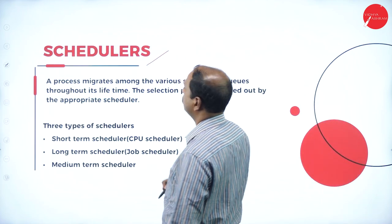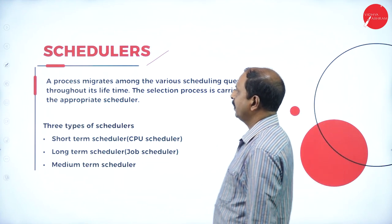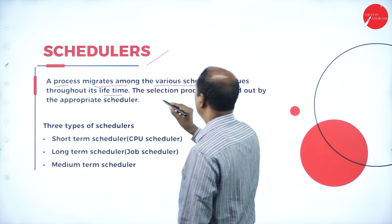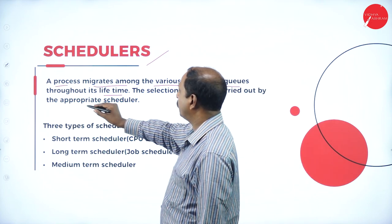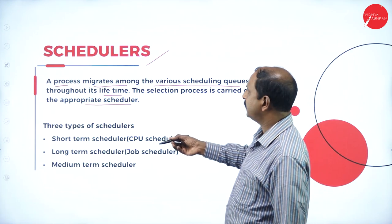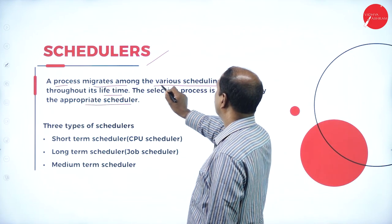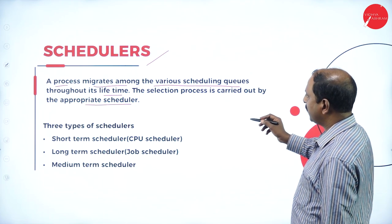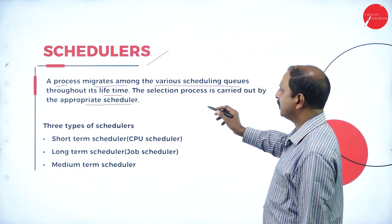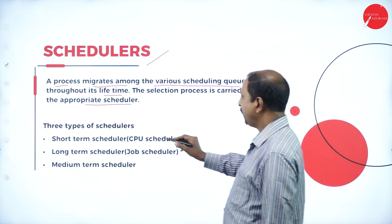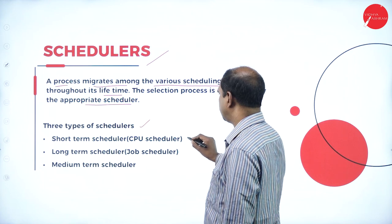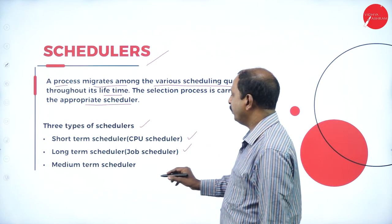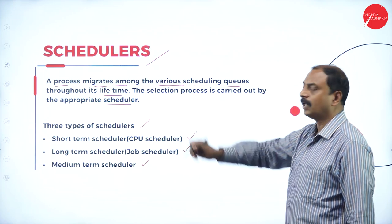In the next slide we will see schedulers. The process migrates among the various scheduling queues throughout its lifetime, and the selection of processes is carried out by an appropriate scheduler. There are three types of schedulers: the short-term scheduler, also called the CPU scheduler; the long-term scheduler, also called the job scheduler; and the medium-term scheduler.